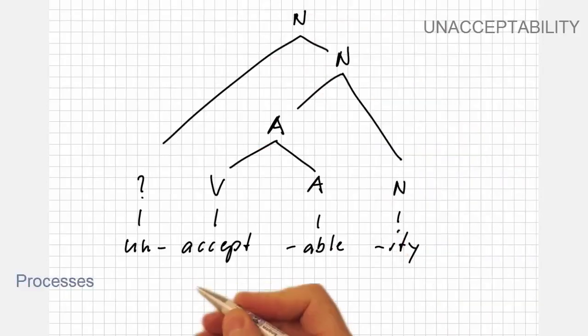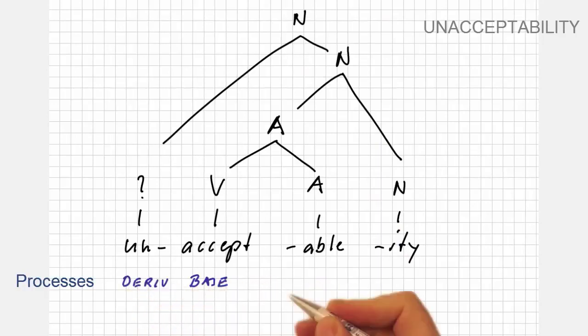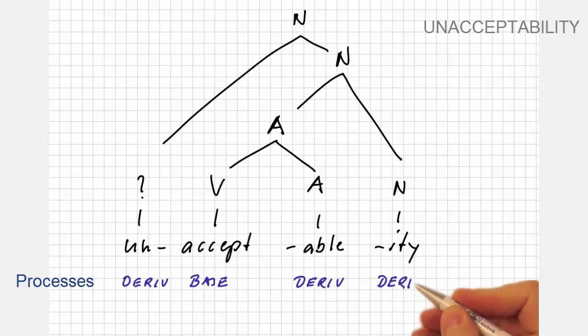The morphological processes involved can easily be described. Accept is the base form. All other processes are examples of derivation.